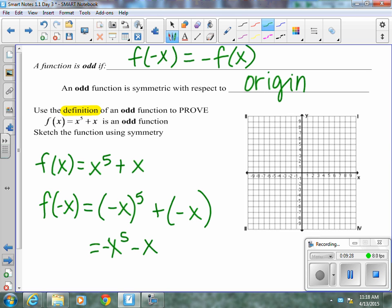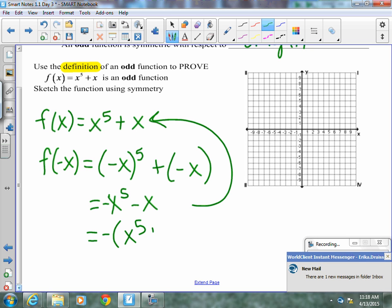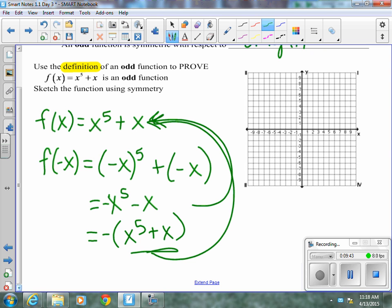Now check. Does this match F of X? It does not. So we know that it's not even. If we pull out a negative, does what's in here match our F of X? And it does. That means it's odd. If after you pull out the negative it still doesn't match, then it would fall into a category called neither. It's not even nor odd. It's neither. And that does happen quite a bit of time.